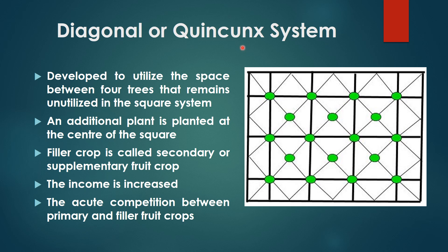The next one is the Diagonal or Quintal system. This system is developed to utilize the space between four trees that remains unutilized in the square system. In the square system only four plants are planted at the four corners, and the center space remains unutilized. But in the Diagonal or Quintal system, one additional plant is planted at the center of the square. This additional plant is called a filler crop — it is a secondary or supplementary fruit crop. By planting this filler crop, the space is utilized for generating income.